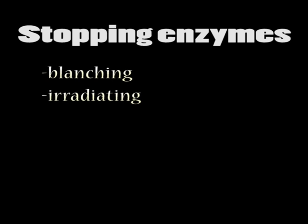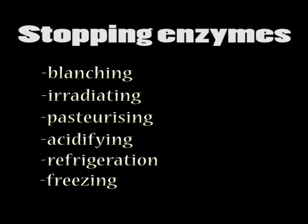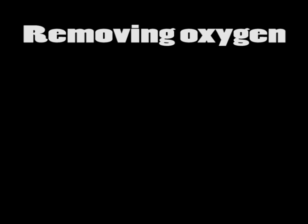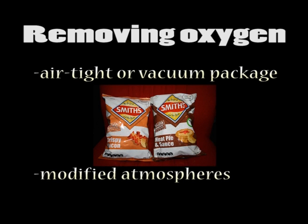Enzyme activity can be ceased by denaturing the enzyme through blanching, irradiating, pasteurizing, or acidifying. Activity can also be slowed by refrigeration or freezing of the sample. The oxygen can be removed by airtight or vacuum packing, or modifying the atmosphere to an inert gas such as nitrogen. Another type of preservative, called antioxidants, focuses on slowing down the natural oxidation of fats and oils in foods.